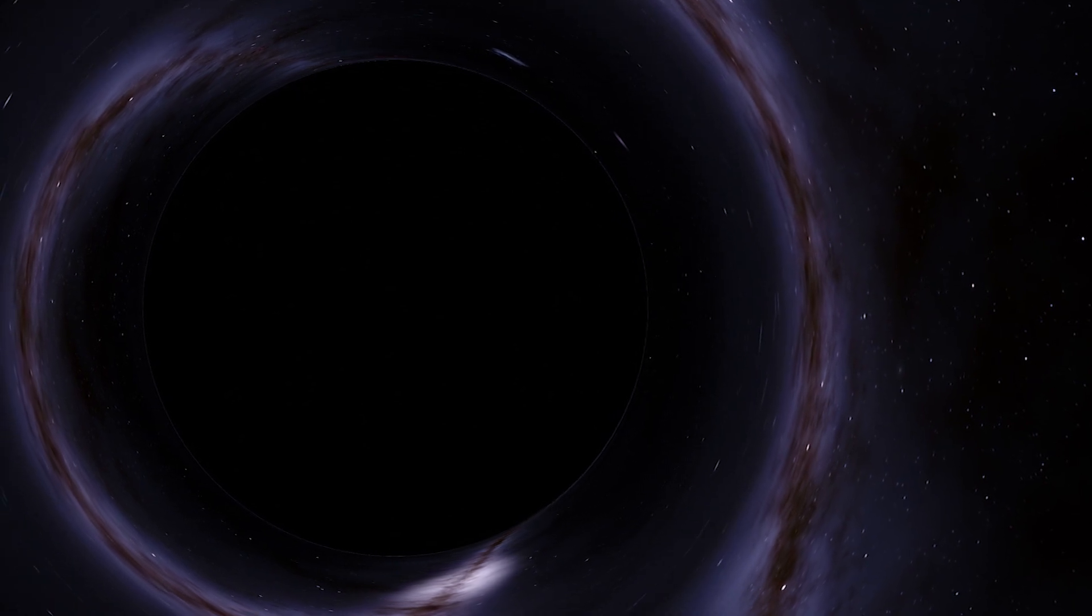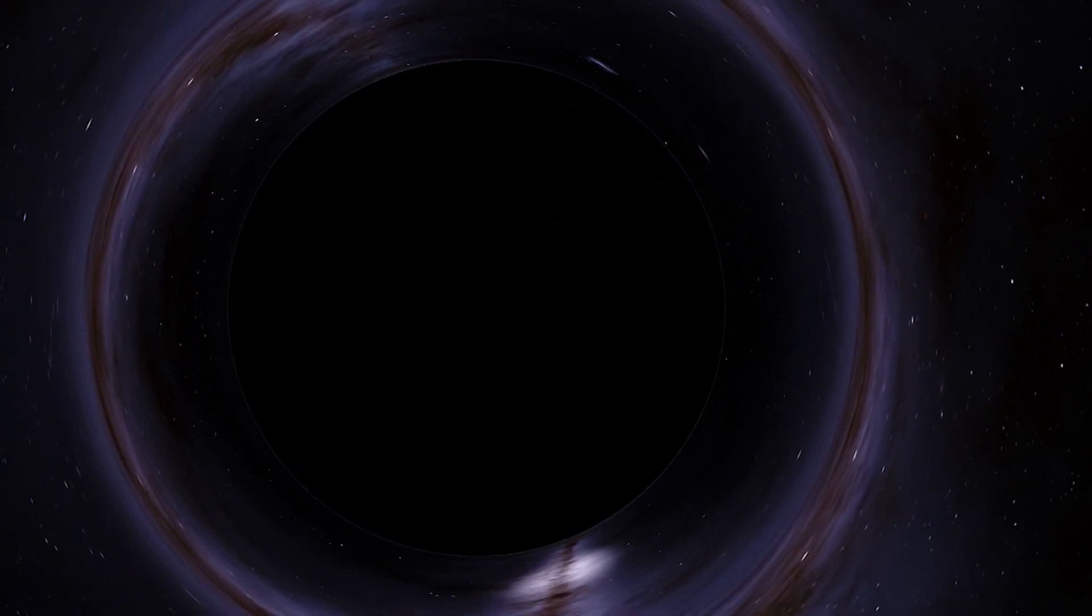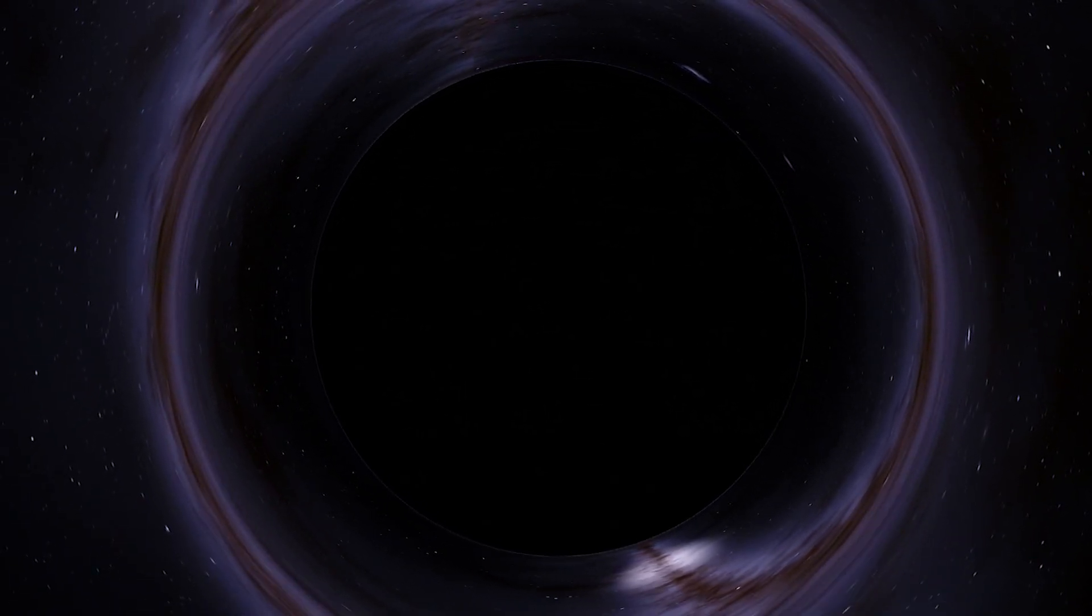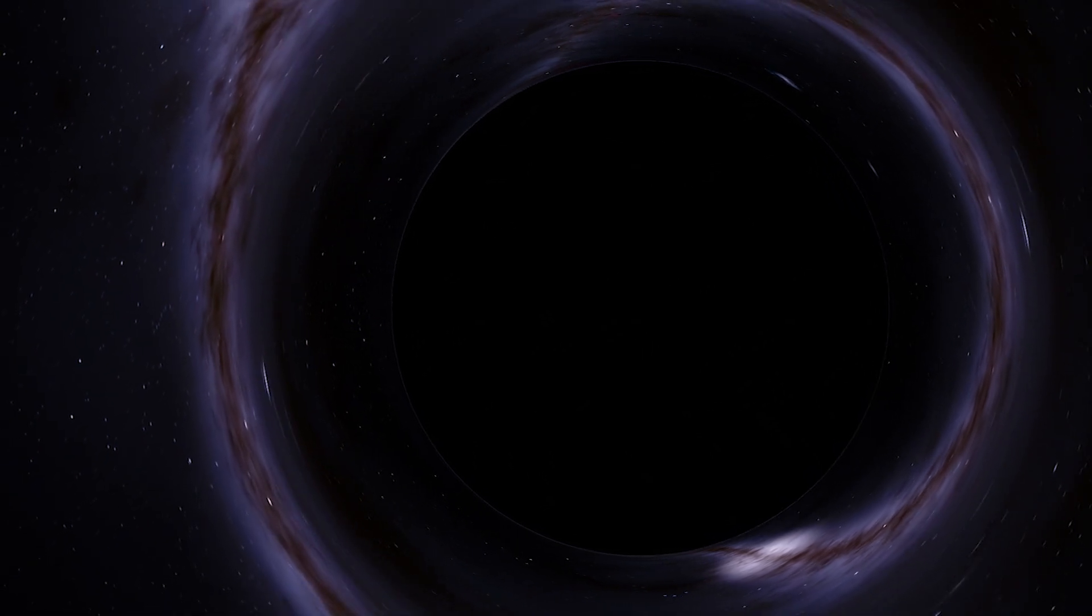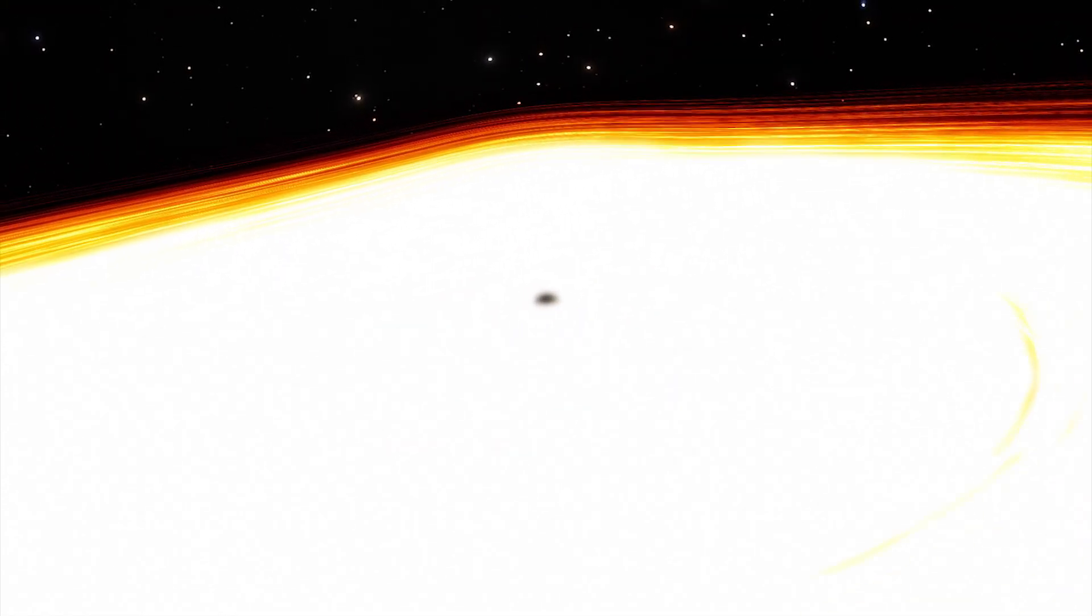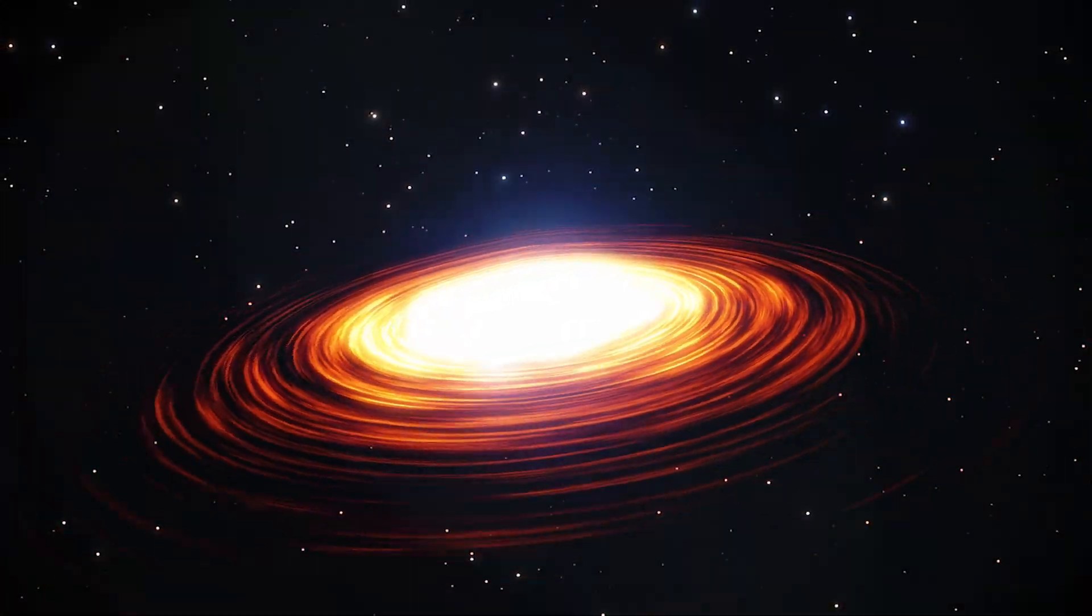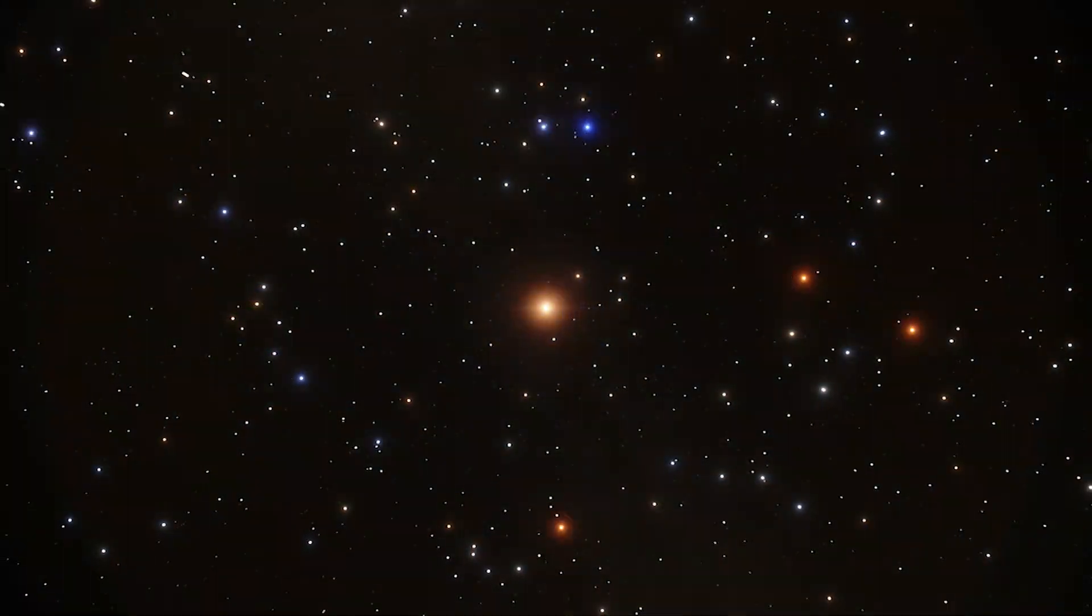According to this model, the first black holes acted as nuclei for the creation of galaxies, drawing in raw star-forming material from the universe around them and growing in size to become the supermassive black holes with a mass of millions of suns that lie at the core of many of today's galaxies.